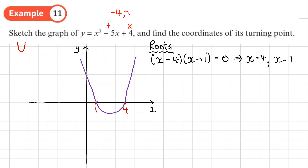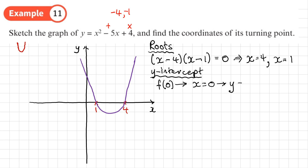Next I need to find where the graph crosses the y-axis — the y-intercept. To find it, I set x = 0. So y = 0² - 5(0) + 4, which gives y = 4. That means the graph crosses the y-axis at 4.